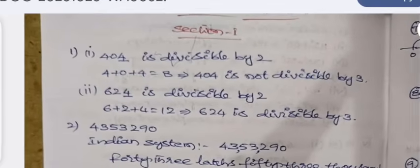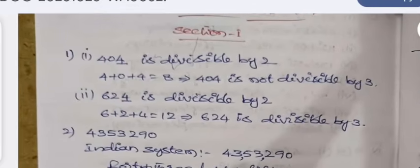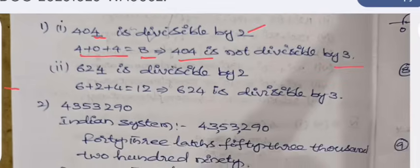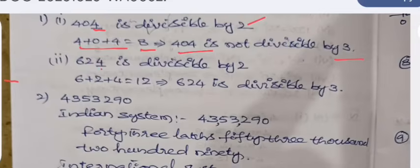These are the answers. 404 is divisible by 4 because the last digit is 4, so it is divisible by 2. The sum of all the digits is 8, so the number 404 is not divisible by 3 because 8 is not divisible by 3. Similarly, 624 has units place 4, so it is divisible by 2. Adding all the digits 6, 2, and 4, we are getting 12. 12 is divisible by 3, so 624 is also divisible by 3.